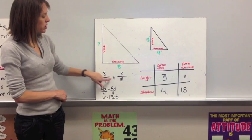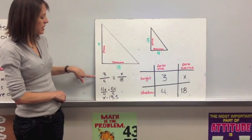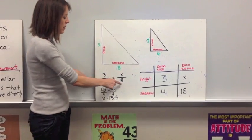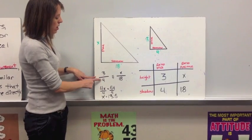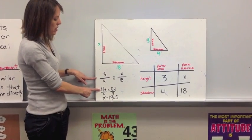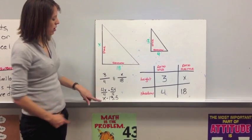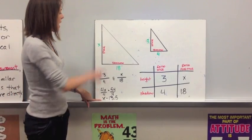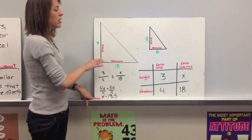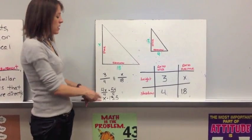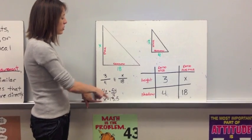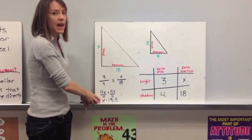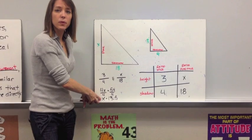So our proportion is 3/4 equals x/18. We do cross products and get 3 times 18, which is 54, equals 4 times x, which is 4x. When we solve, we get 13.5 as the height of the flagpole. Now, if we were truly trying to get the exact measurement of the pole, this might not be perfect, but it's going to be pretty close.